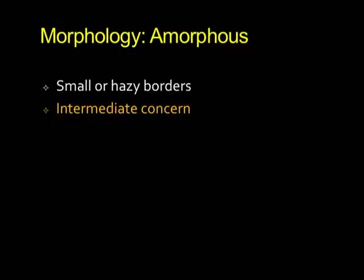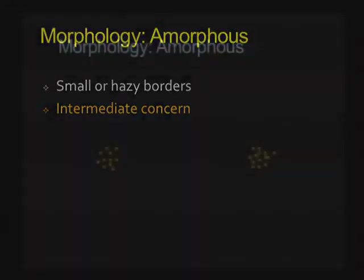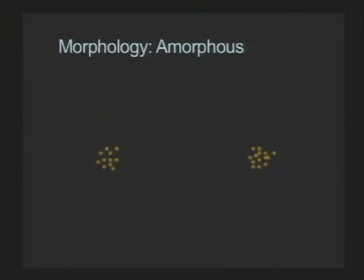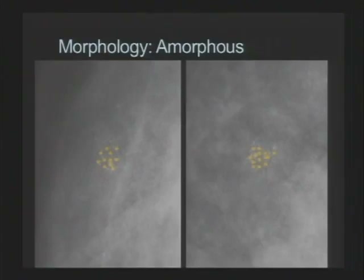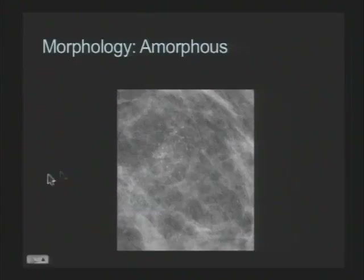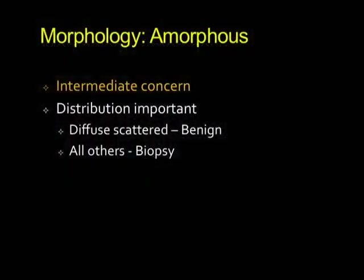Moving on to amorphous calcifications — these are small calcifications with very hazy borders, difficult to see, and of intermediate concern. You can't really see the edges; you don't know if they're round or square or triangular. On mammography, they're very hard to see. They're of intermediate concern but on the lower end. If they're diffuse and scattered, technically amorphous calcifications are still benign. But any other distribution warrants a biopsy.